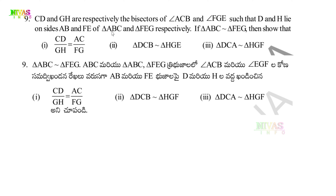For the first part, we have two triangles. CD is the bisector of angle ACB, and GH is the bisector of angle FGE. So angle C is divided into two equal parts by CD, and angle G is divided into two equal parts by GH. Let's first draw these triangles.